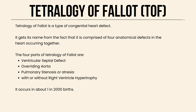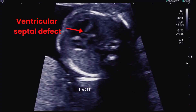The four components of Tetralogy of Fallot are ventricular septal defect, overriding aorta, pulmonary stenosis or atresia, and right ventricular hypertrophy. It occurs in about 1 in 2,000 births.